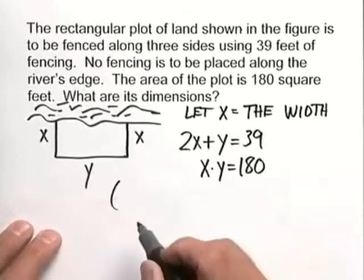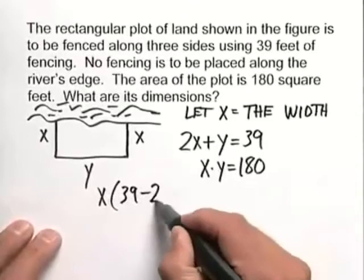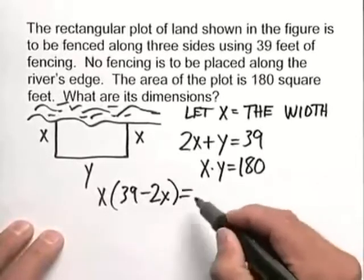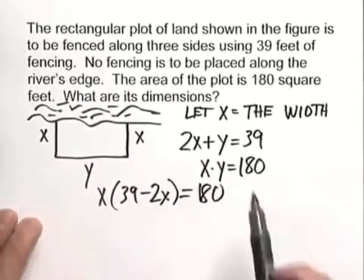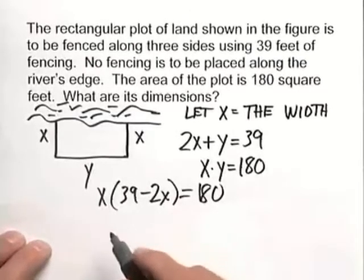And so from that, we're going to have x times the quantity 39 minus 2x, and then that is equal to 180. So solving for y and substituting into the second equation gives us this nice quadratic equation.